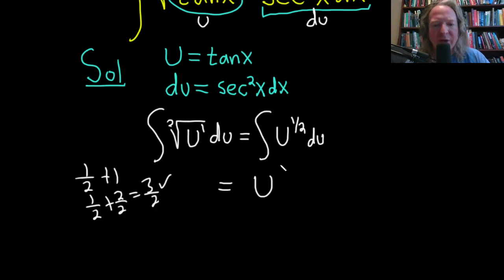So this is going to be u to the three halves, and then you divide by three halves. But instead of dividing by three halves we can multiply by the reciprocal, same thing, then plus C.